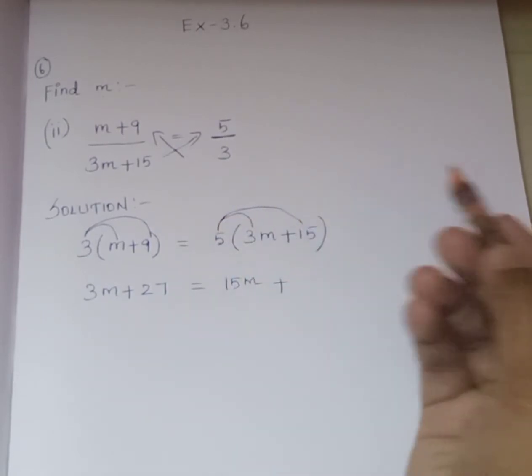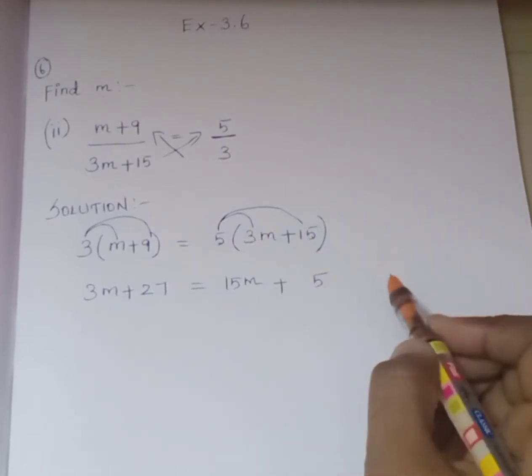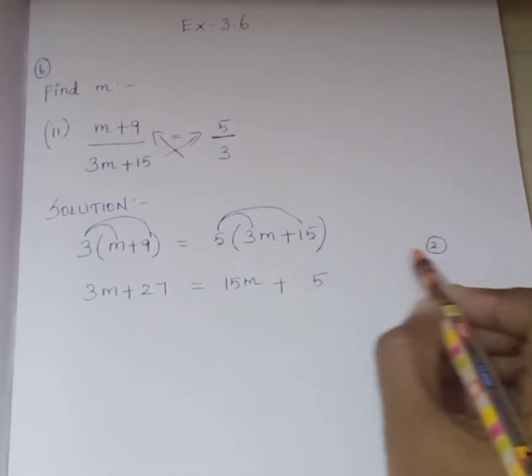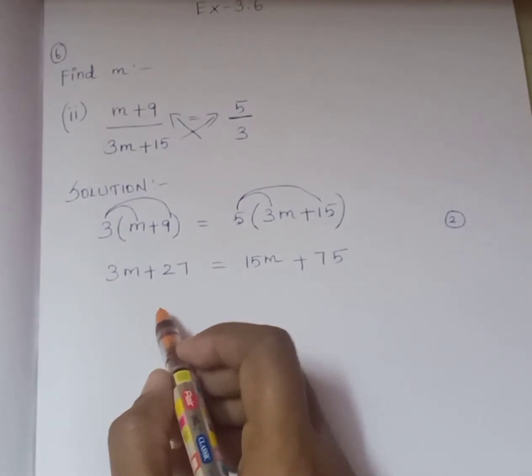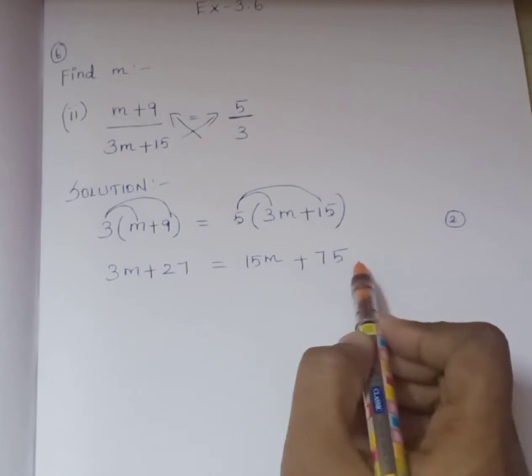Plus 5 times 15. 5 times 5 is 25, carry 2. 5 times 1 is 5, plus 2 is 7. So now we have 3m + 27 = 15m + 75.